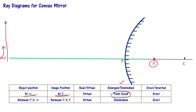The image is virtual because it is on the back side of the mirror, and since it is on the back side, the image is upright — erect. In both cases of the convex mirror, you are going to have erect and virtual images. In Case 2, the image is point-sized, meaning diminished to point size, whereas in Case 1, it is diminished but not point-sized.